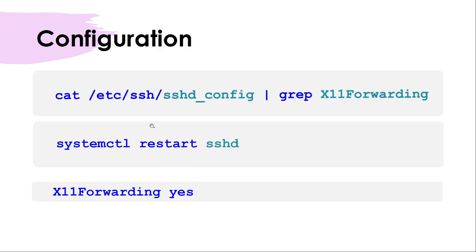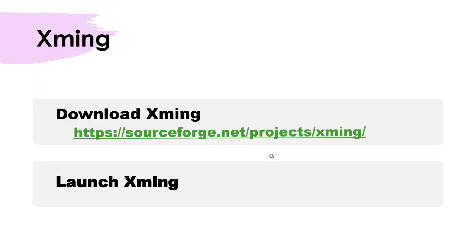In the sshd_config file there is a variable called X11Forwarding. If it is set to no, change it to yes. Once you change it to yes, restart your SSH service for the configuration to take effect. If you do not restart, even if you change the variable, it will not be effective. So change X11Forwarding and restart the sshd service.